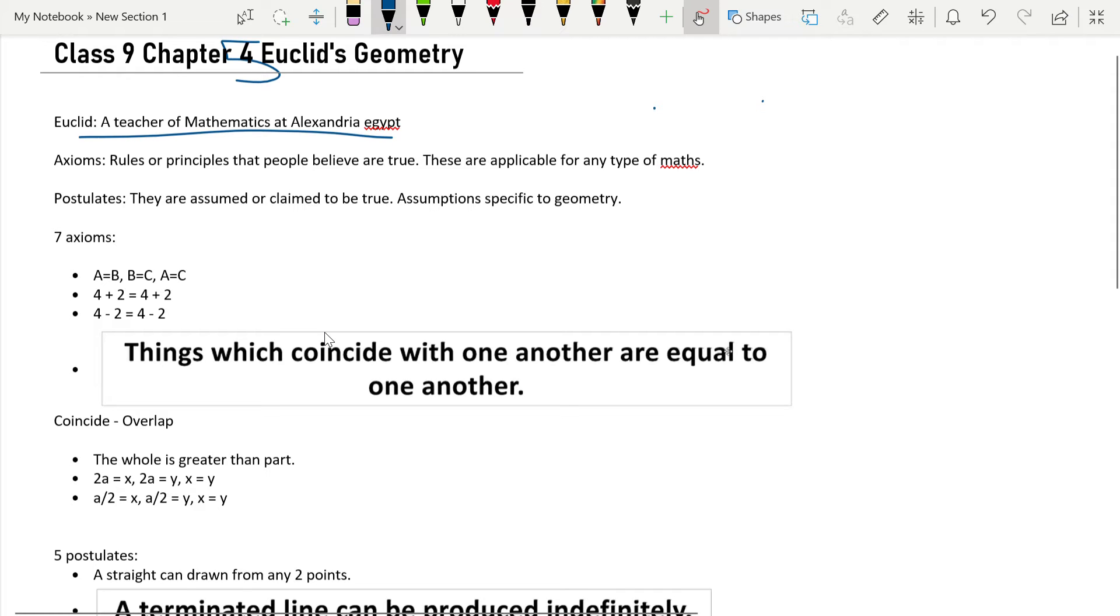They are nothing too fancy. They're just like axioms are rules or principles that people believe are true, and they are applicable for any type of maths. Meaning they can be used in algebra, not only in geometry as it says in the title, but it can be used in algebra anywhere. Now, postulates are assumed or claimed to be true, which is also kind of what axioms are, but they are assumptions specific to geometry.